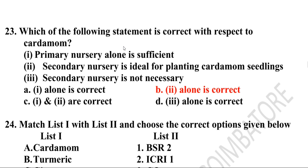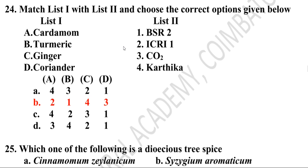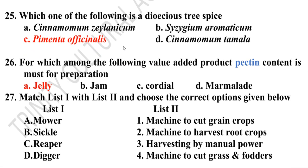Twenty-fourth question: Match list one with list two. Cardamom — ICRI 1; turmeric — BSR 2; ginger — Karthika; coriander — CO 4. Option B is the correct answer. Twenty-fifth question: Which one of the following is a dioecious tree spice? Myristica fragrans (hementa officinalis) is the correct answer.